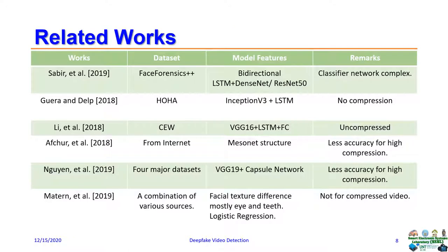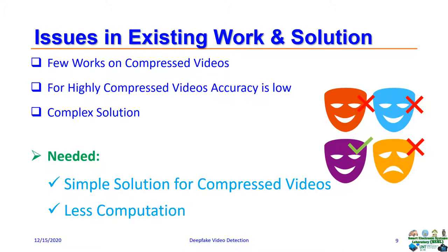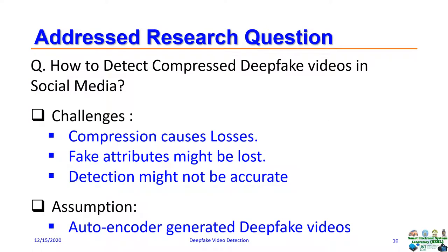These are some of the existing works. Each work has used different models and different datasets, and they have some issues too. Few works have been done for compressed videos, and for highly compressed videos the accuracy is not so good. Most of the works are also complex in nature. So a simple solution for compressed videos was needed that does less computation. Our research question becomes: how to detect compressed deepfake videos in social media.